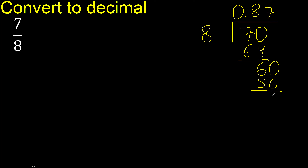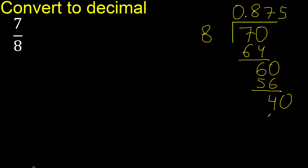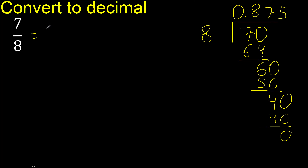Subtract: 60 minus 56 is 4. Bring down 0 to get 40. 8 multiplied by 5 is 40. 40 minus 40 is 0, therefore we finish here. The answer is 0.875.